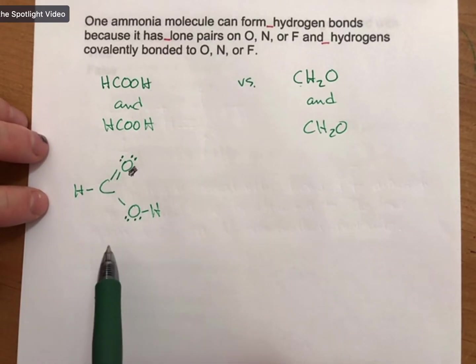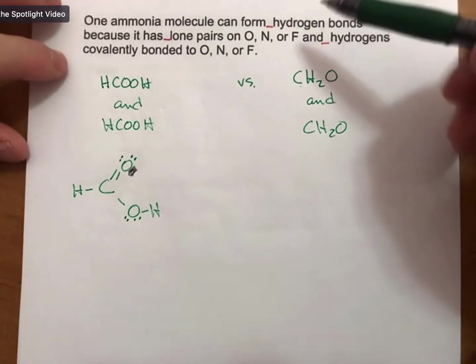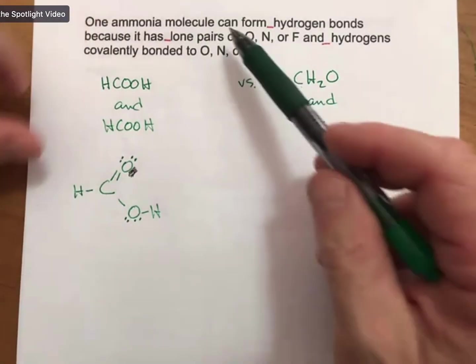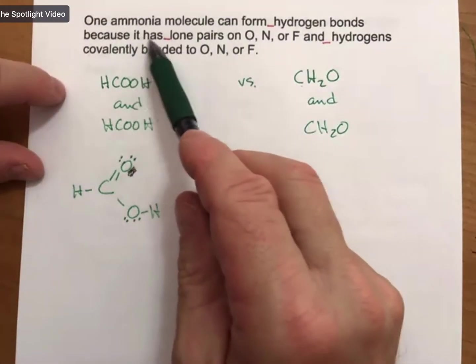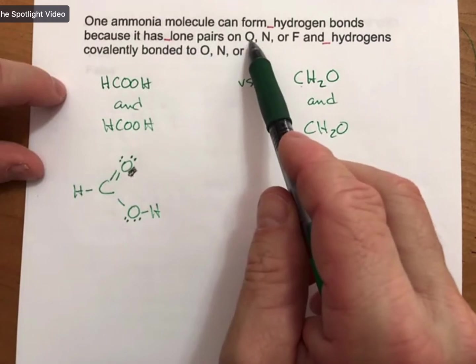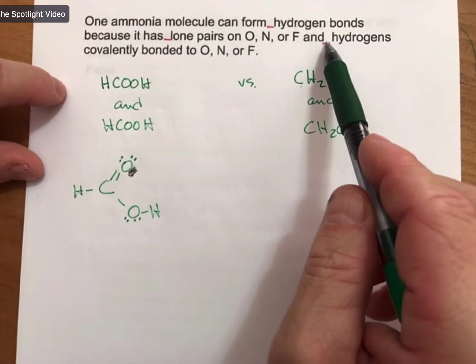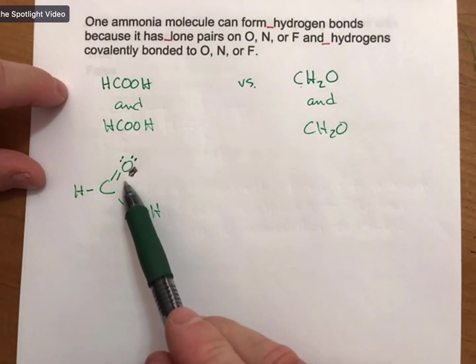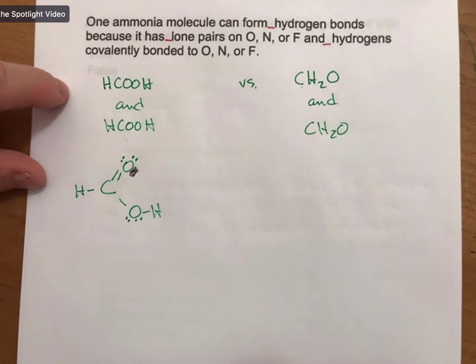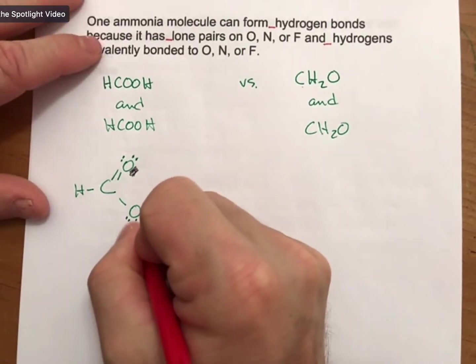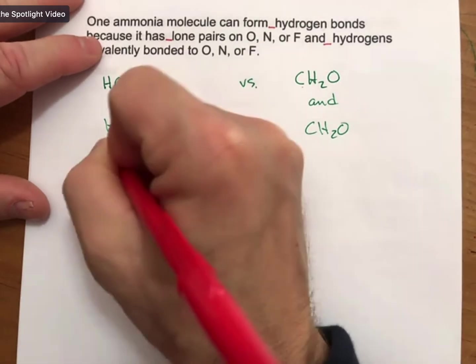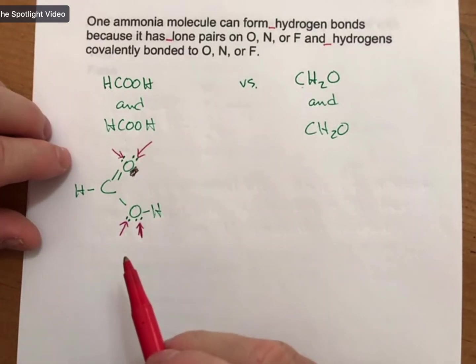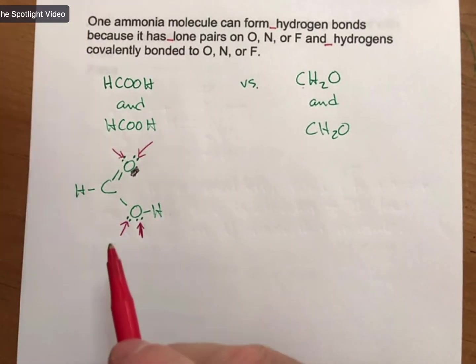So this is formic acid. It is a weak acid. And what I'm asking you to do here is, this molecule can form blank hydrogen bonds because it has blank lone pairs on oxygen, nitrogen, or fluorine, and blank hydrogens. Well, let's look at this molecule. This molecule has one, two, three, four.